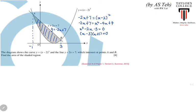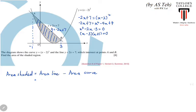To find the area of the shaded region, we compute: Area (shaded) = area under the line graph between points A and B, minus the area under the curve. This gives us the integral from x = -1 to 3 of (-2x + 7) dx, minus the integral from x = -1 to 3 of (x - 2)² dx.